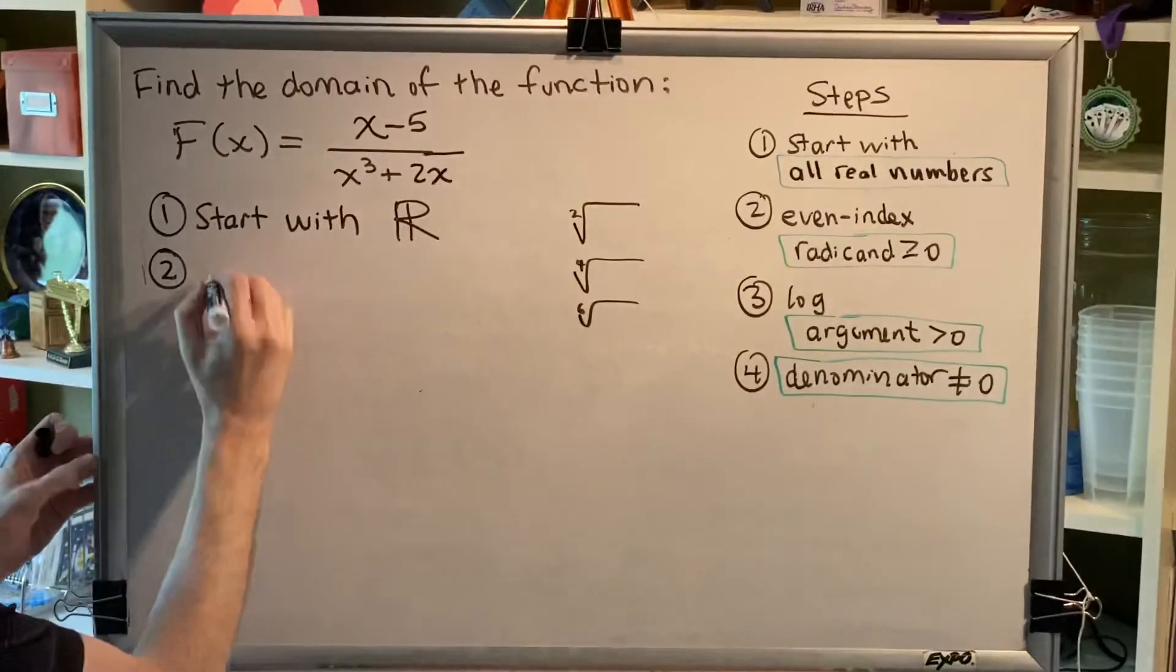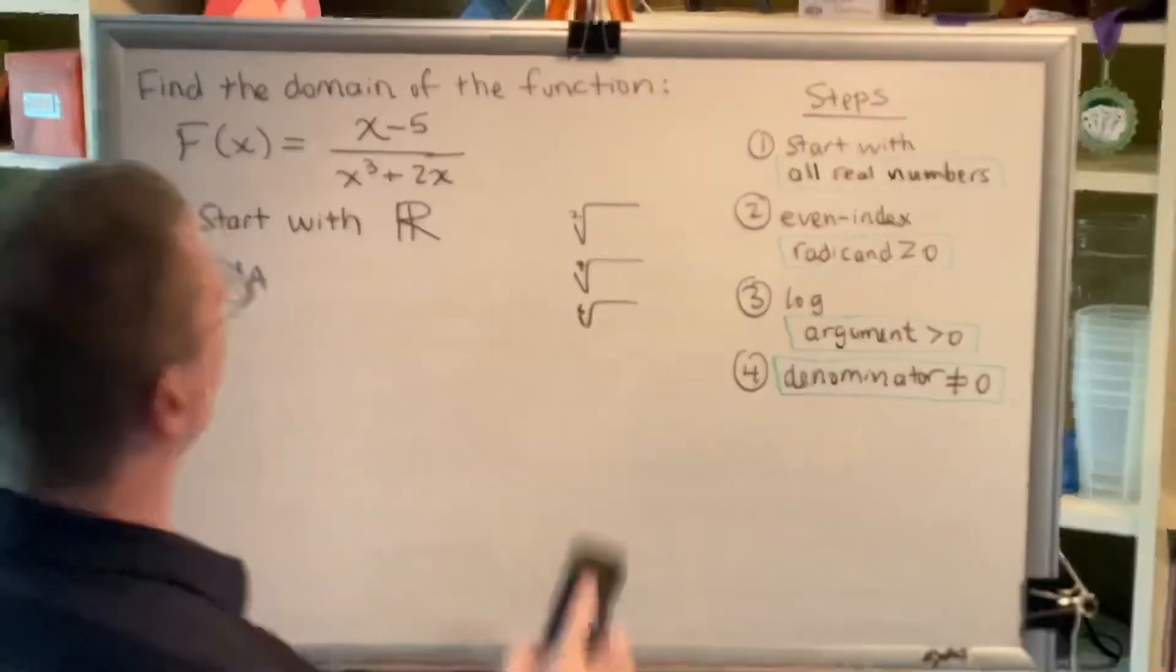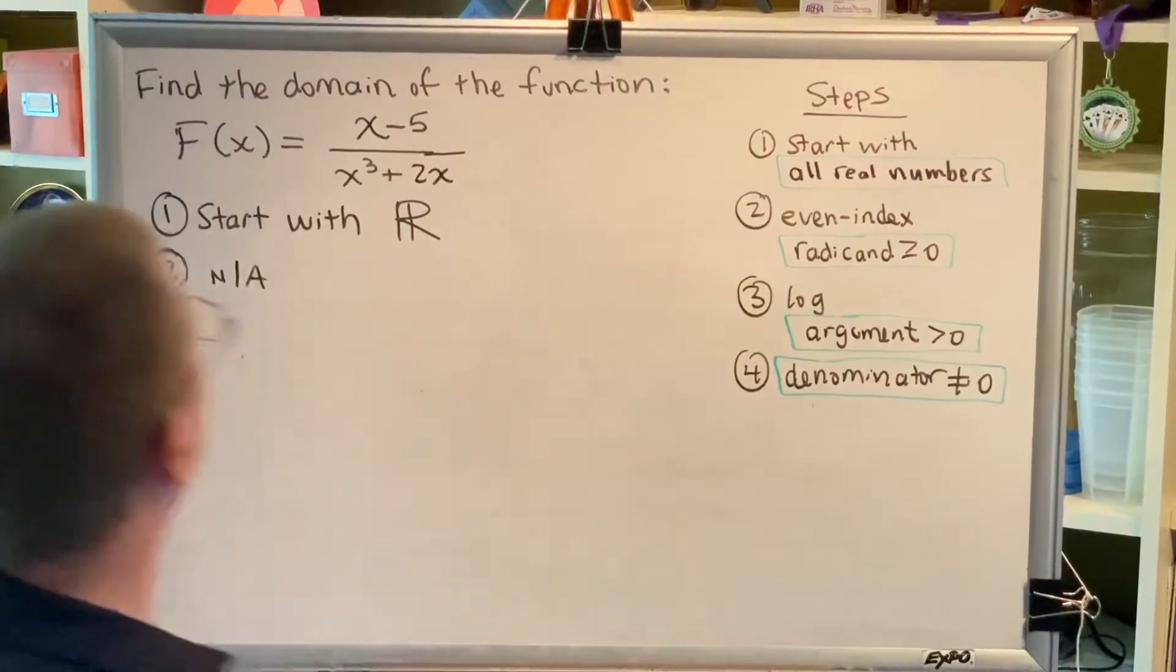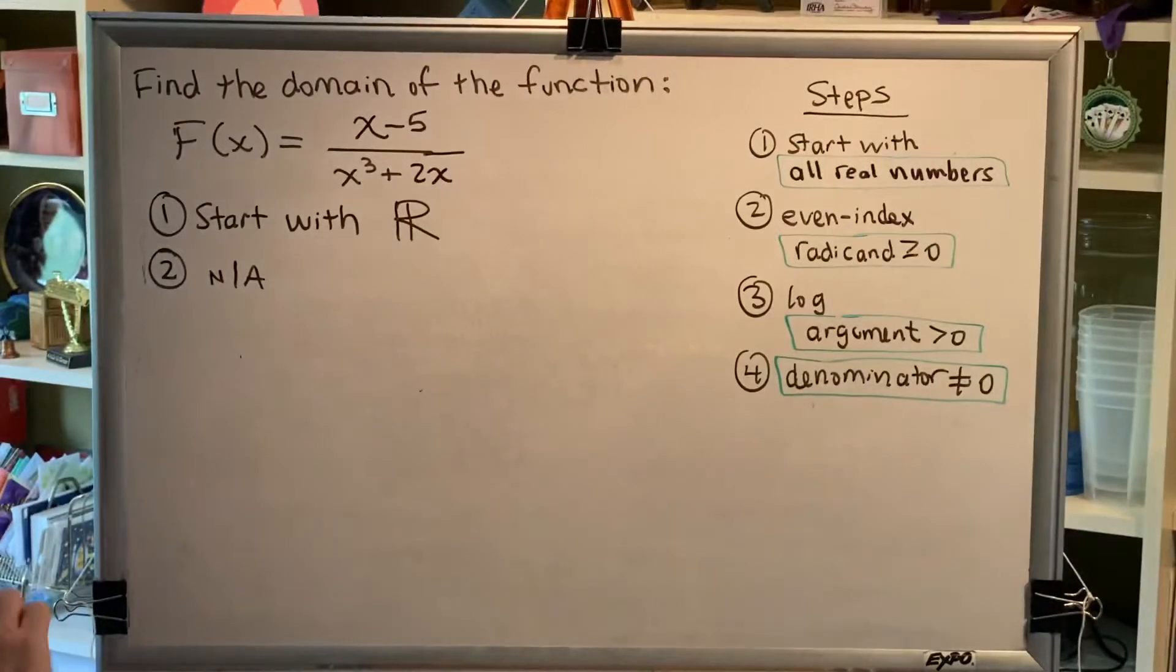We don't have any of those in this problem, which means this step is not applicable, and we will not be removing any numbers for that reason. So at the end of step 2, our domain is still all real numbers, because we haven't removed any.